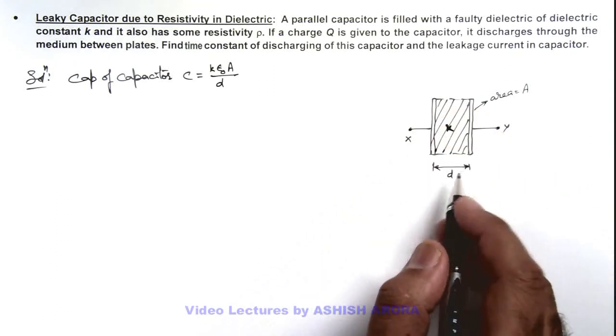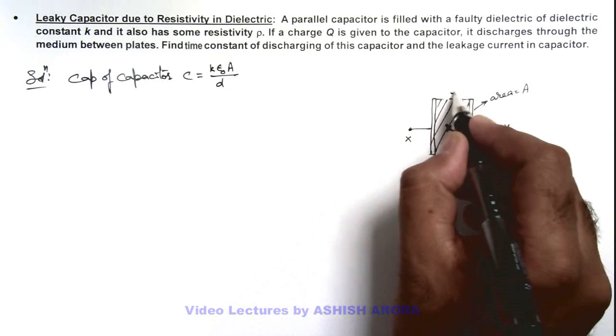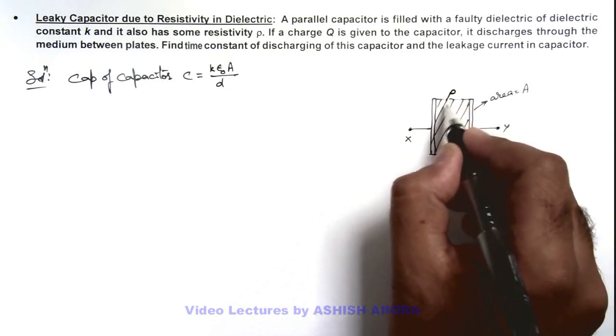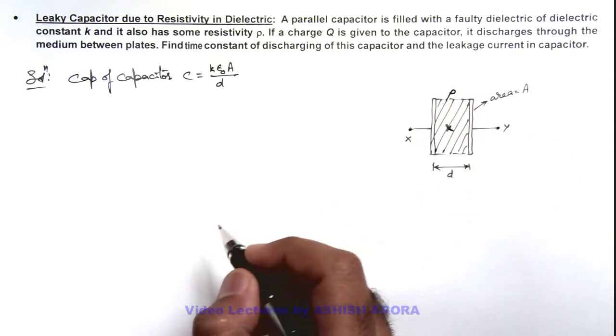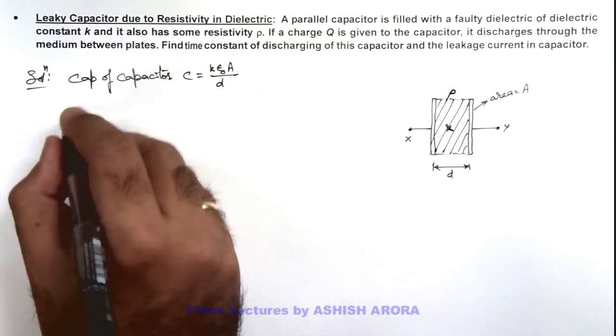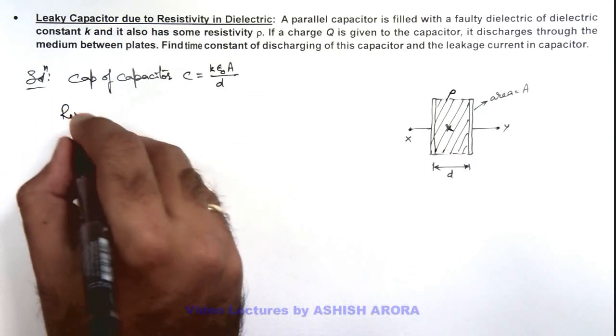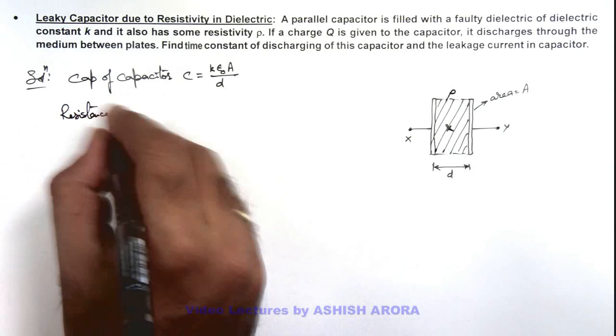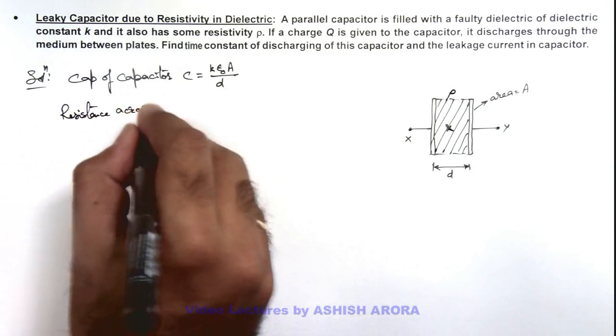Here in this situation, as we are given that this medium also has some resistivity rho, due to some conductivity in the medium we can also write the resistance across the plates of the capacitor.